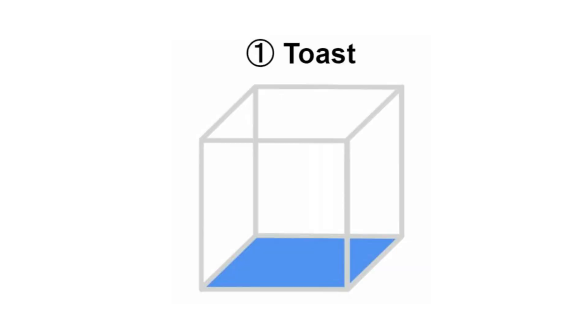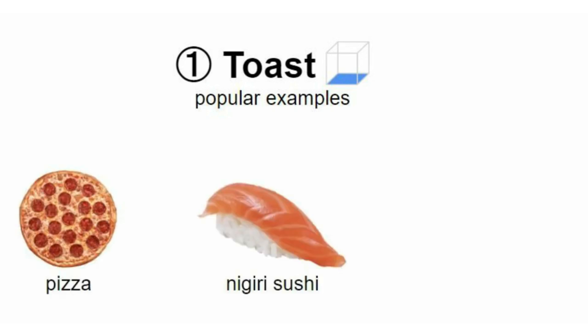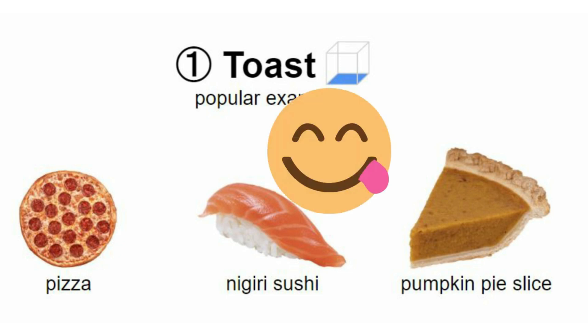First we have toast, where the structure is on the bottom. Popular examples count as pizza, nigiri sushi, pumpkin pie slice. Yeah, because the pie crust is on the bottom and you've got the pumpkin pie stuff on top of it. So a pumpkin pie is a toast. I love pumpkin pie — I want pumpkin pie now, guys.